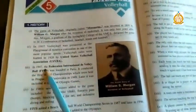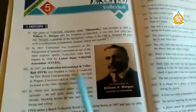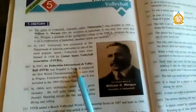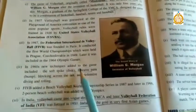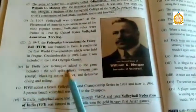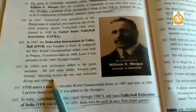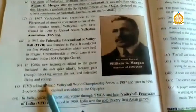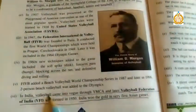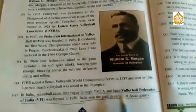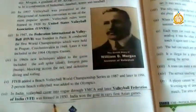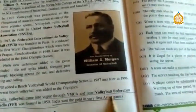In 1947, the Federation Internationale de Volleyball was founded in Paris. In 1960, new techniques added to the game included the soft spike, forearm pass, blocking across the net, and defensive diving and rolling. In India, volleyball came into prominence through YMCA, and later the Volleyball Federation of India was formed in 1950. India won the gold in the very first Asian Games.